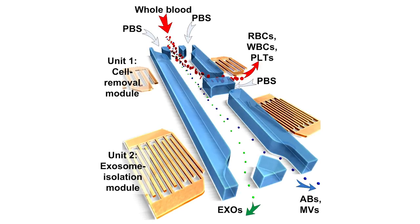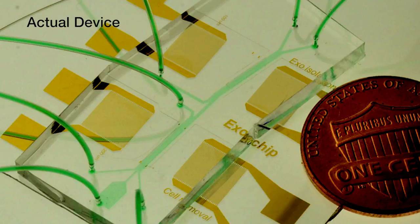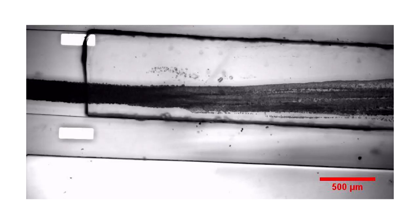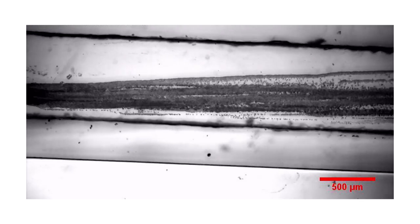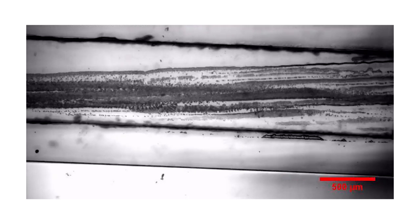Each time a cell or particle flowing through the channel encounters a node, the pressure guides the cell particle in a particular direction to isolate it and ultimately remove it.